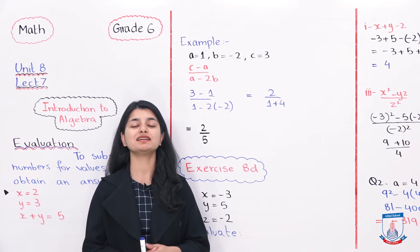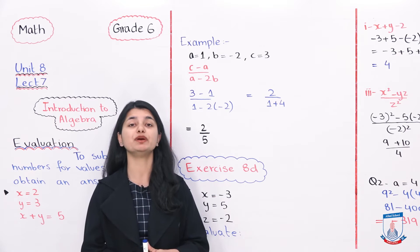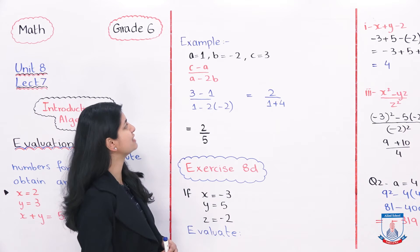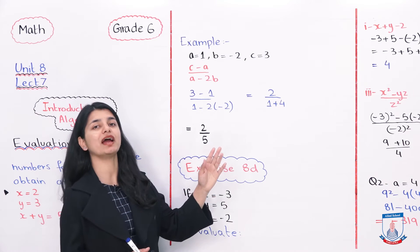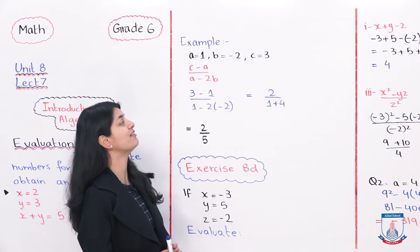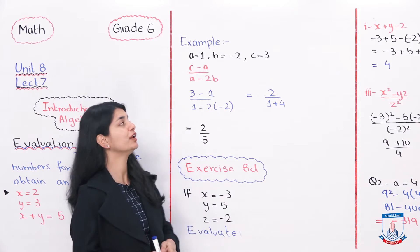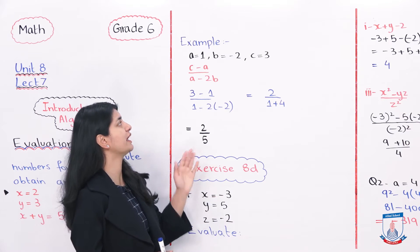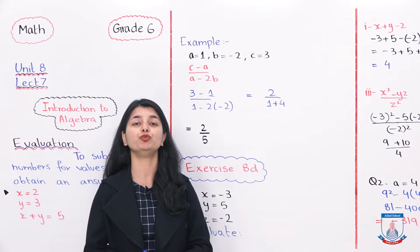Now we have a detailed example of evaluation. For example, in this example, what is the a value? a is 1, b value is minus 2, c value is 3. The question they have given you is c minus a over a minus 2b.